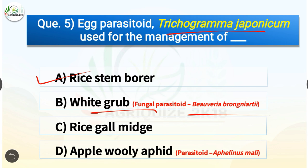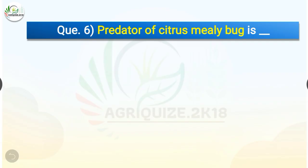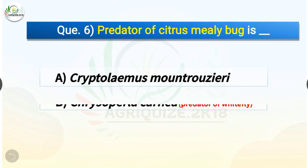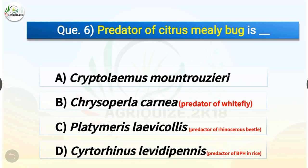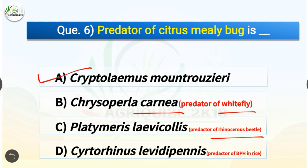Question number six: the predator of citrus mealybug is — options are Cryptolaemus montrouzieri, Chrysoperla carnea, Platimeris laevicollis, or Cyrtorhinus lividipennis. The correct answer is option A, Cryptolaemus montrouzieri. Chrysoperla carnea is the predator of whitefly, Platimeris laevicollis is the predator of rhinoceros beetle, and Cyrtorhinus lividipennis is the predator of brown planthopper in rice.